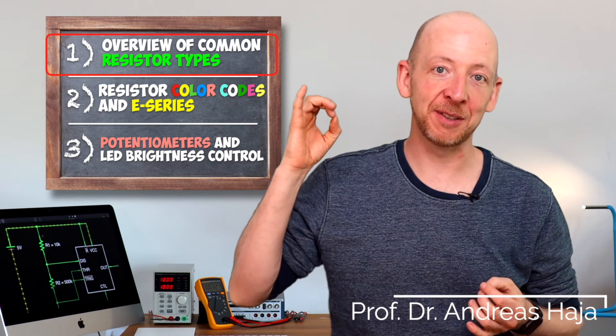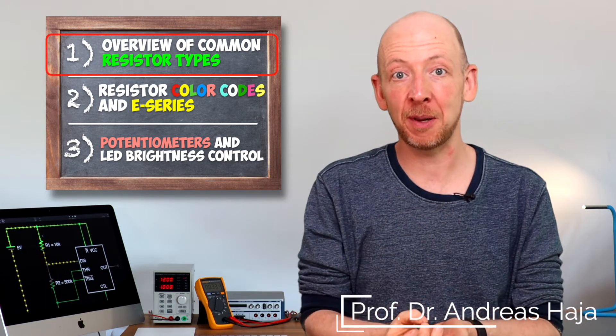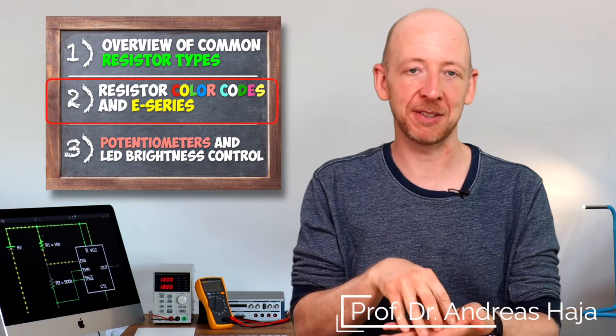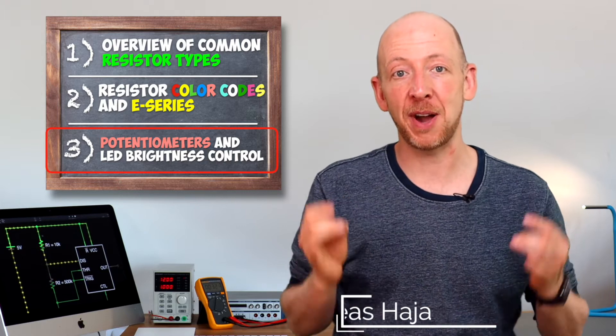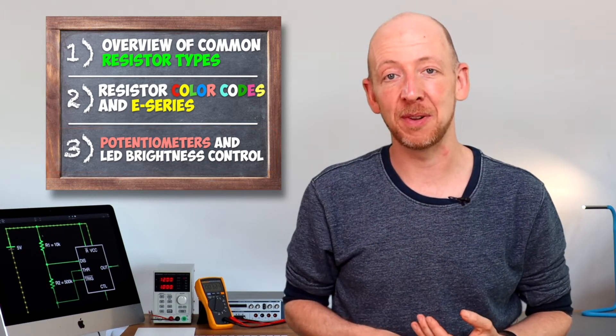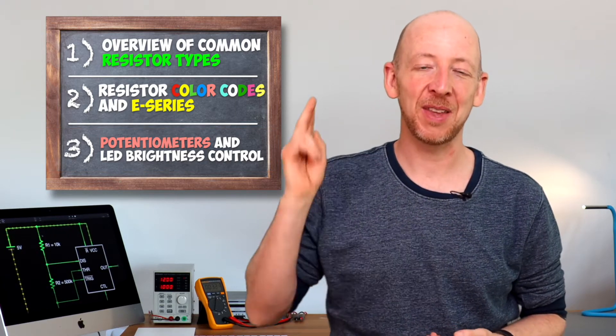In this video, I will show you what an electrical resistor is, which types of it are available and what color codes and E-series are all about. And I will also show you what a potentiometer is and how you can use it to control the brightness of an LED, for example. My name is Andreas from The Fearless Engineer and here we go.